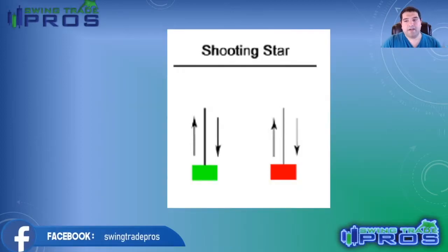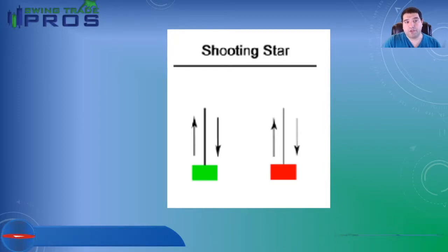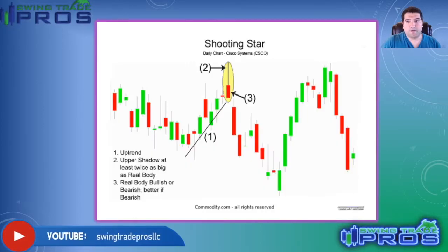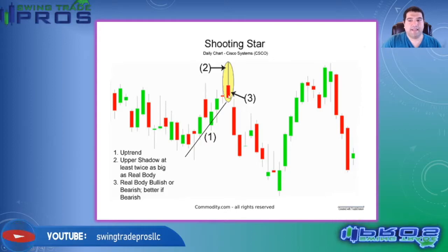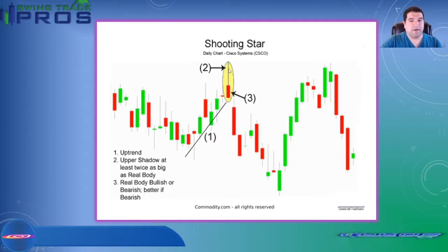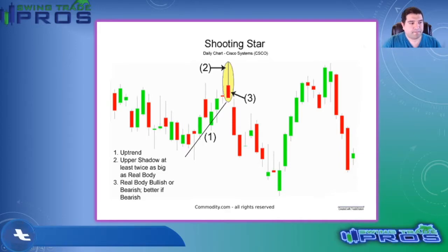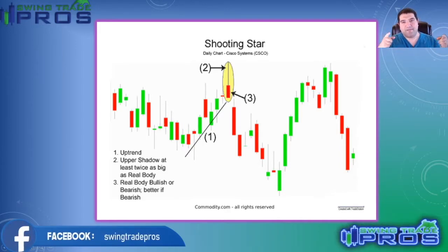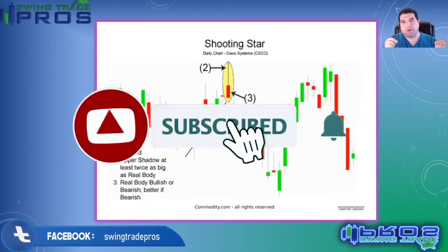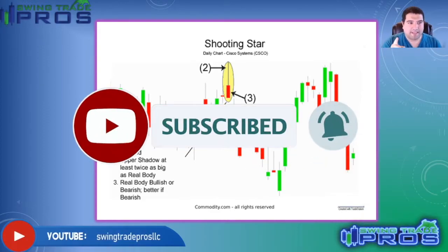The next candlestick pattern is the shooting star. This is also a bearish reversal pattern. As you guys can see, we got the shooting star to the downside here, and what do we get? We got price action moving to the downside.